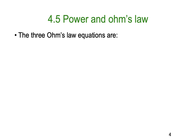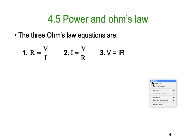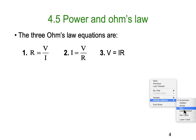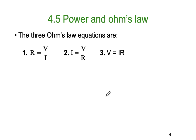So, power and Ohm's Law. There are three Ohm's Law equations, and the more we can get them automated — meaning being able to use them without having to directly think about them — the better. The three Ohm's Law equations are: R equals V divided by I; I equals V divided by R; and V equals I times R.